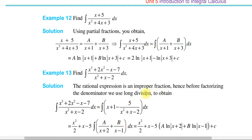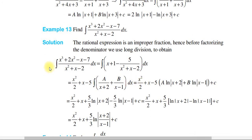An improper fraction is one where the numerator degree is greater than or equal to the denominator degree. For example: (x² minus x minus 7) divided by (x² plus x plus 2) requires long division first, giving a quotient of (x plus 1) and remainder involving minus 5 over (x² plus x minus 2).